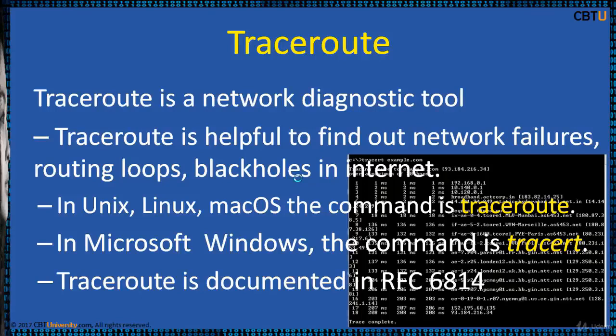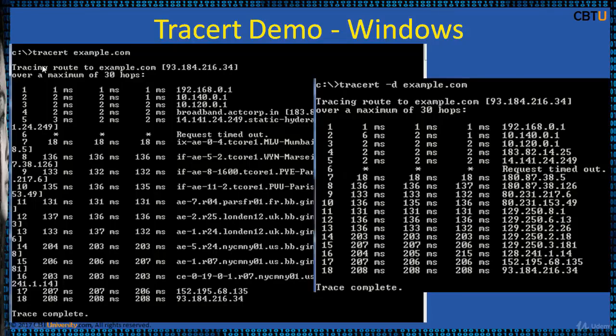TraceRoute proceeds unless all three packets sent are lost more than twice, then the connection is lost and the route cannot be evaluated. PING, on the other hand, only computes the final round-trip times from the destination point. In IPv6, the tool name is traceroute6 or tracert6.